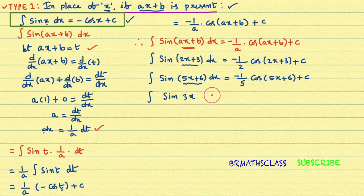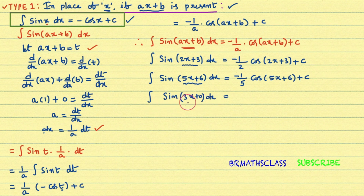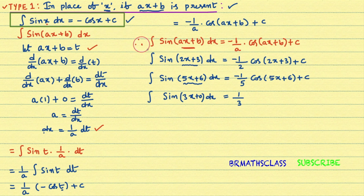One more example: integral of sin(3x) dx. Actually 3x is of the form 3x plus 0, so it fits the form sin(ax+b). Our answer starts with 1 divided by x-coefficient; x-coefficient is 3. Integral of sin(x) dx is minus cos(x)+c, so we write minus cos(3x) divided by 3, plus c.